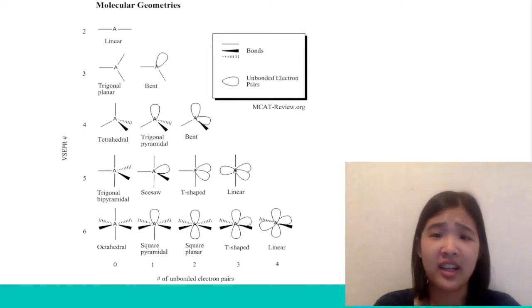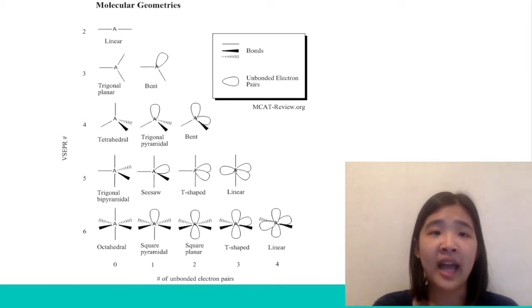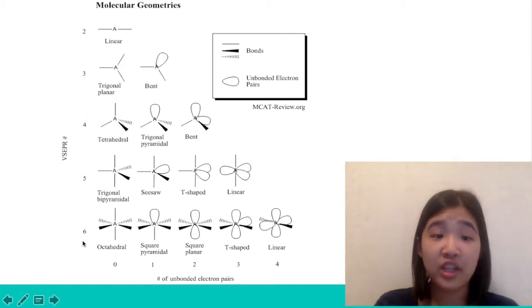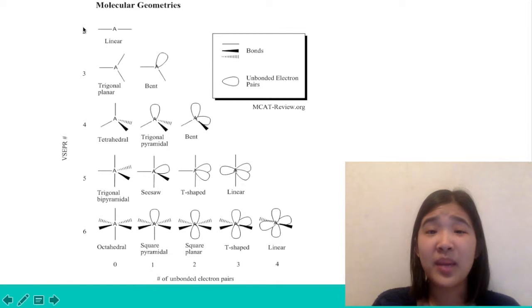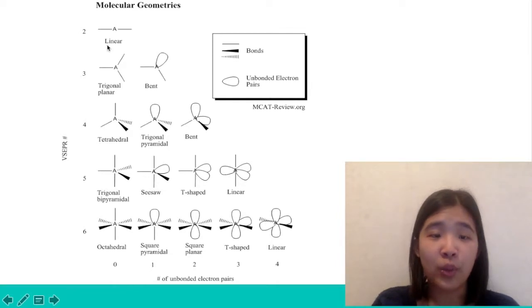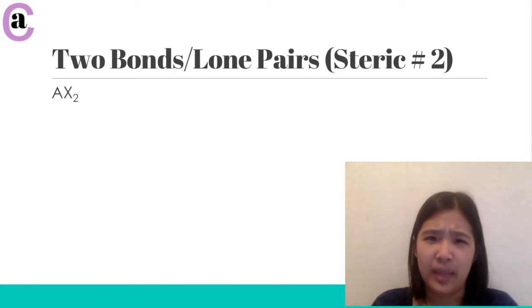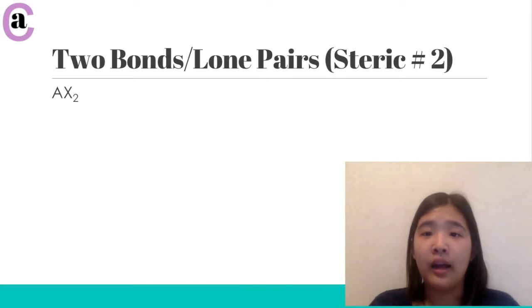Here is a VSEPR chart — you can find this basically anywhere, through Google or in any chemistry textbook. This is one I found to be very basic and easy to read. On the left you can see the VSEPR number, which is essentially the steric number, and then the molecular geometries based on the number of unbonded electron pairs — from zero all the way up to four.